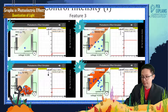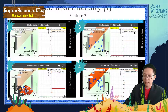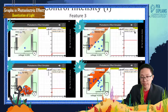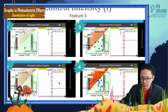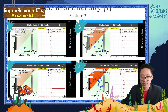This one in the middle — intensity 30% — you see the saturation current is around 40. And intensity 60%, the saturation current is 80. So intensity 60% is twice the intensity of 30%. The saturation current also increases from 40 to 80, which is twice. Twice the intensity gives twice the saturation current.